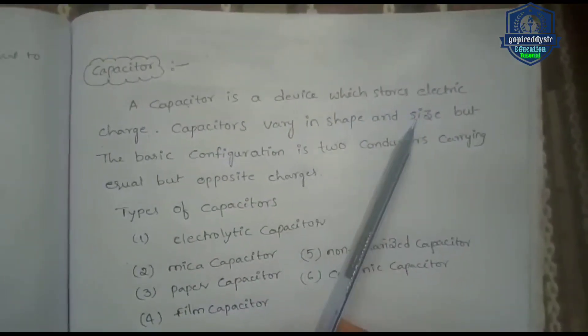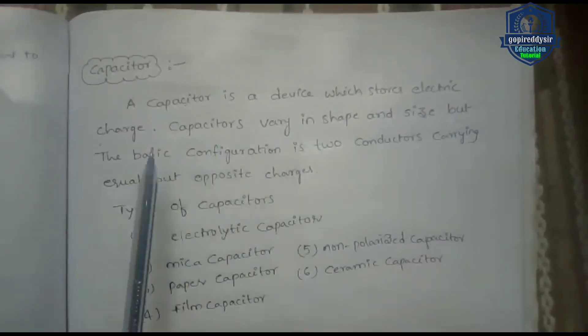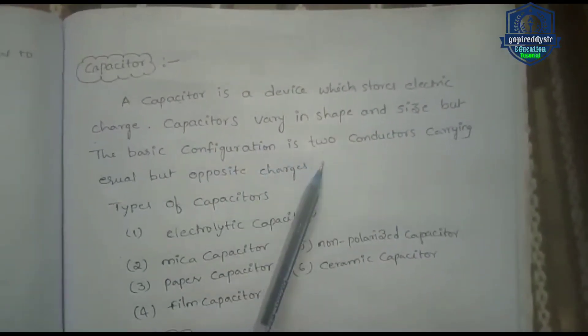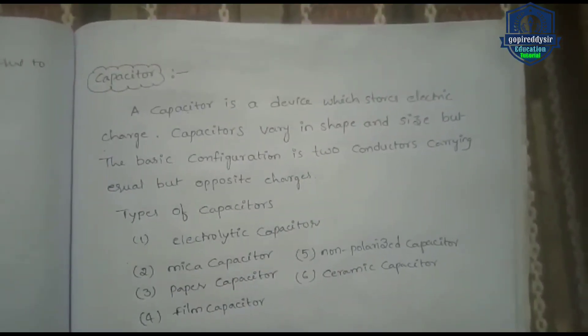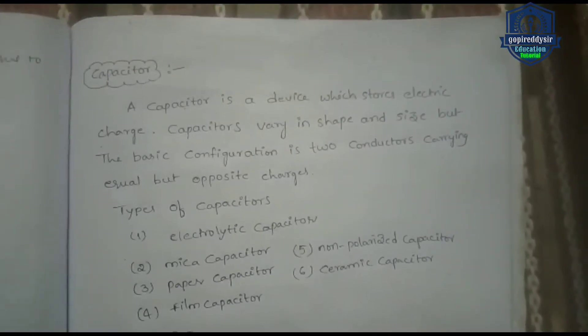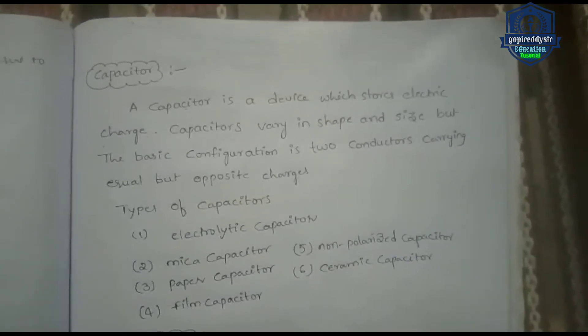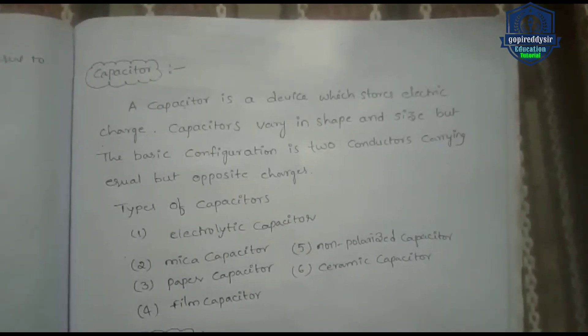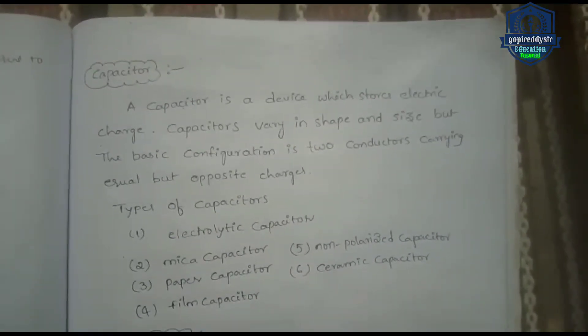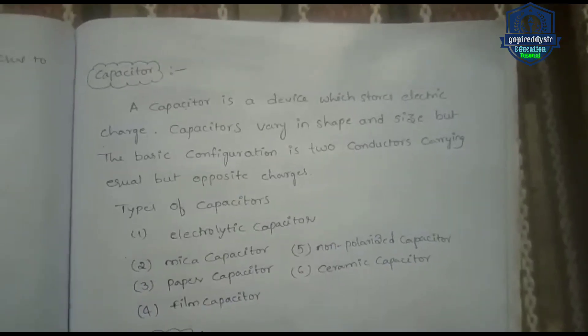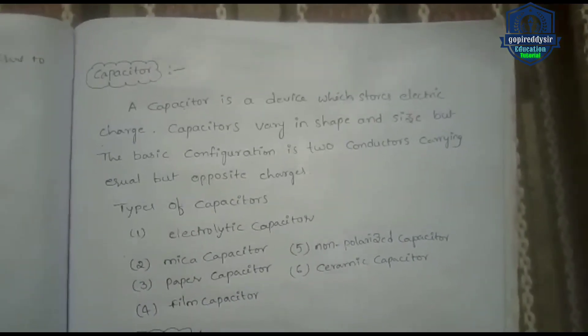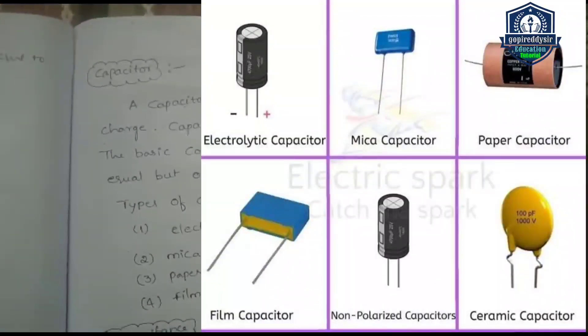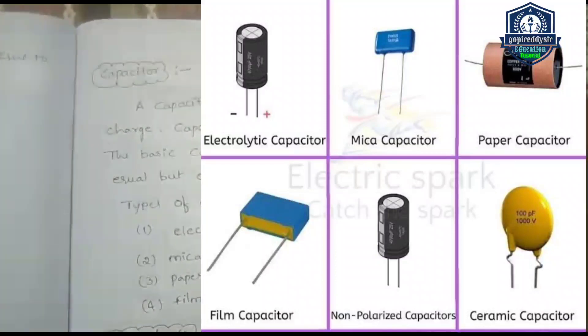Capacitors vary in shape and size, but the basic configuration is two conductors carrying equal but opposite charges. So we have different shapes and sizes available, but the basic thing is the capacitor configuration is two conductors carrying equal and opposite charges.